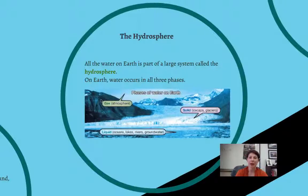The hydrosphere is all of the water on Earth, part of this large system that we call the hydrosphere. So on Earth we can see that water occurs in all three phases of matter. So the phases of matter are gas, liquid, and solid.